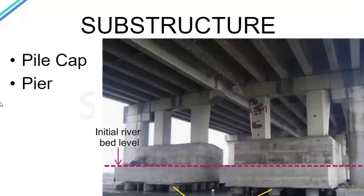Here we see a bridge with piles going from the bottom, and we have a pile cap. The magenta line marks the initial riverbed level. During the low flood season the water level has gone down, exposing these piles. Some part of these piles would be in the water, and then they rest on the firm strata below the riverbed, which is where they transfer all the load.